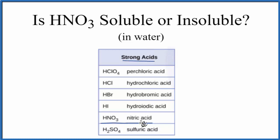When we have these strong acids, they're going to dissociate 100% when we put them in water. That means they're going to break apart into their ions. So nitric acid HNO3 is going to be soluble in water.